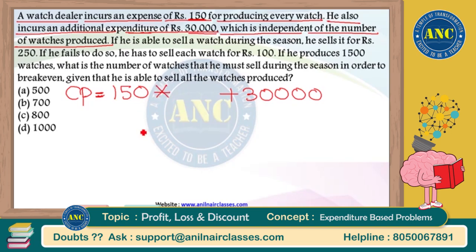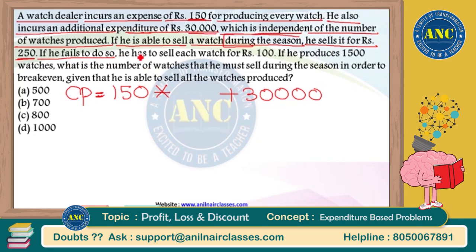If he is able to sell a watch during the season, he sells it for 250 rupees per watch. If he fails to do so — if he does not sell a watch during the season — he has to sell each watch for 100 rupees.